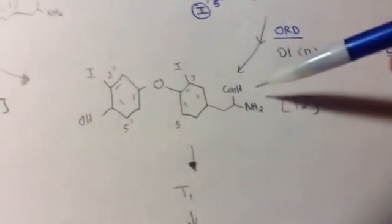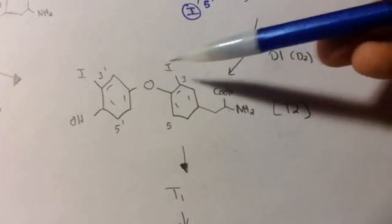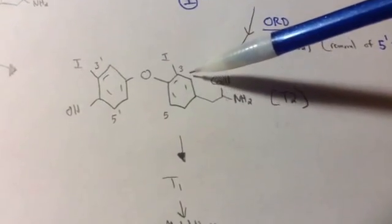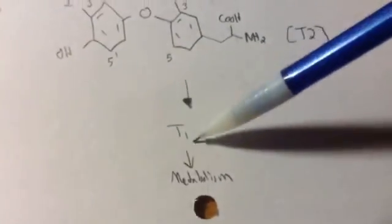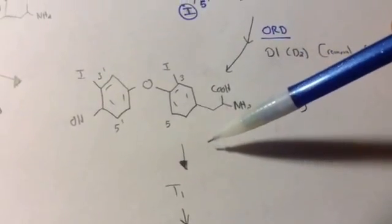So if we remove that with this enzyme, this is the structure we get, which is known as T2. It has one, two remaining, both at the three prime and the three position, which then gets metabolized to T1 and broken down further, which I'm not going to show in this video.